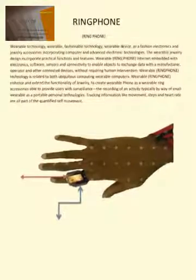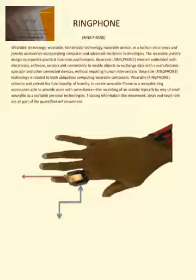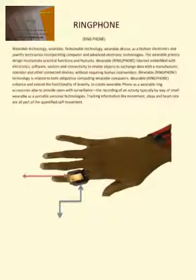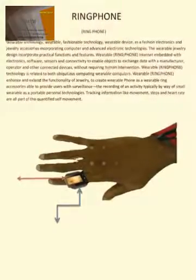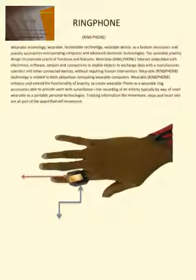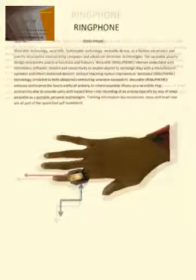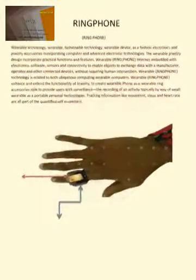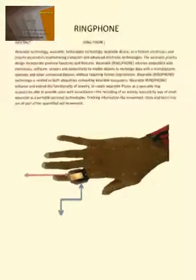Wearable ring phone technology is related to both ubiquitous computing and wearable computers. It enhances and extends the functionality of jewelry, to create a wearable ring accessory able to provide users with surveillance, the recording of an activity typically by way of small wearable as a portable personal technology. Tracking information like movement, steps and heart rate are all part of the quantified self-movement.